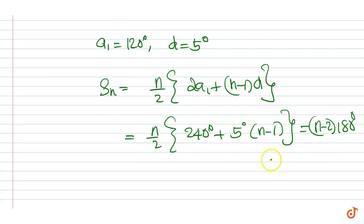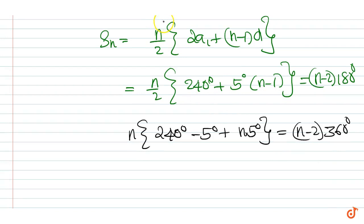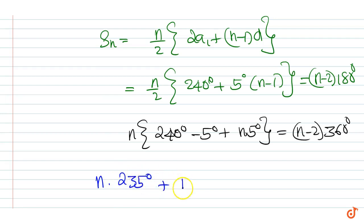Now, multiplying throughout by 2, we get n times (240 degrees minus 5 degrees) plus n into 5 degrees equal to (n-2) into 360 degrees. So we can write the equation as (n-3) into 720 degrees.